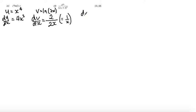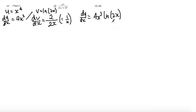Using the product rule, dy by dx equals v du by dx plus u dv by dx. Plan ahead before writing this out — think about the neatest way to write it. Writing 4x cubed as a coefficient of the natural log is much neater, so I write 4x cubed ln(2x). Then for the other term, x to the power of 4 times 1 over x, which simplifies in one step to x cubed.